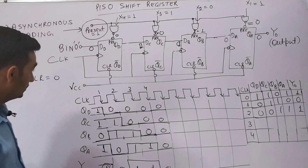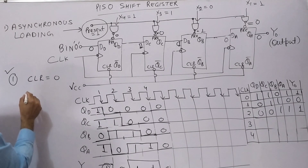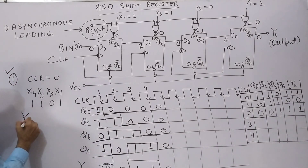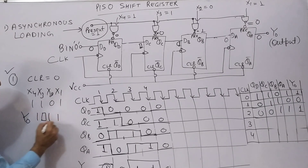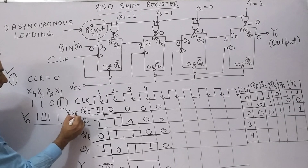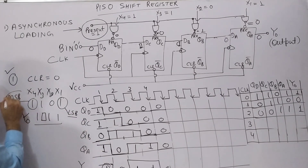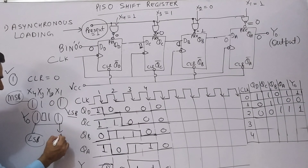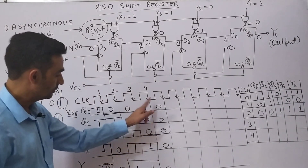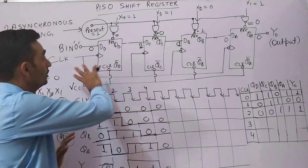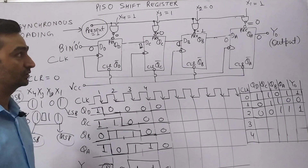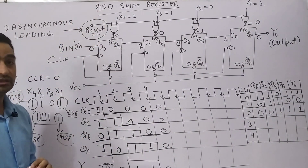So we loaded data 1, 1, 0, 1 — that is x4, x3, x2, x1 — and the serial output YO gives us 1, 1, 1, 0, 1, 1. This means the least significant bit comes first at the output side, and the most significant bit comes after the third clock at the output. So the entire parallel data completely reaches the output after four clocks. This is parallel-in serial-out shift register with asynchronous loading. Thank you.